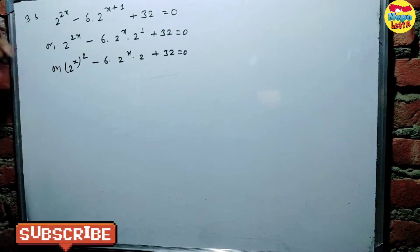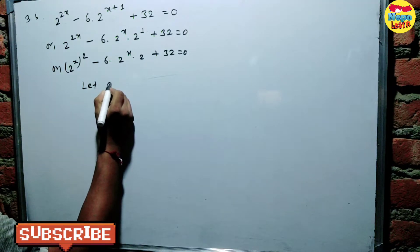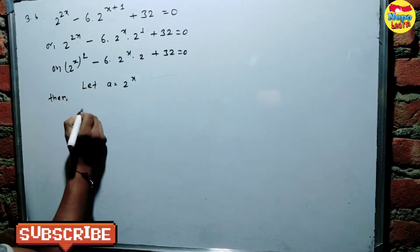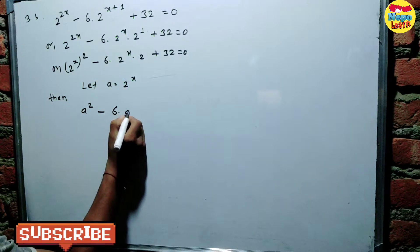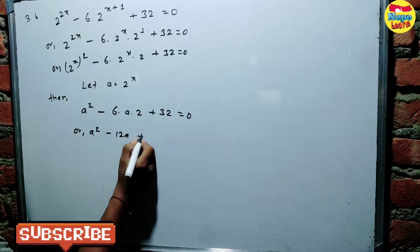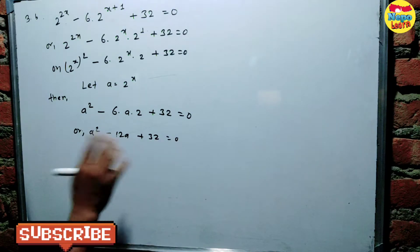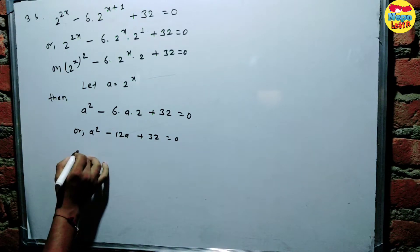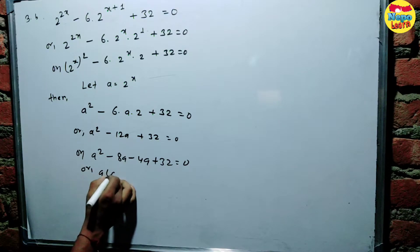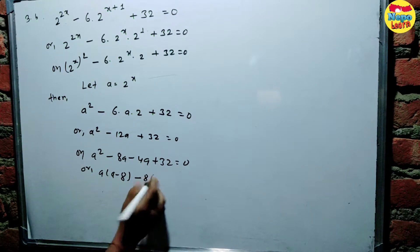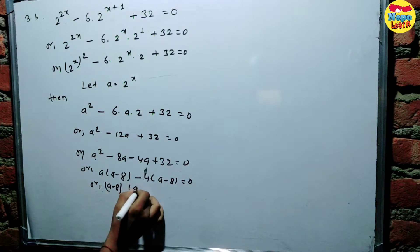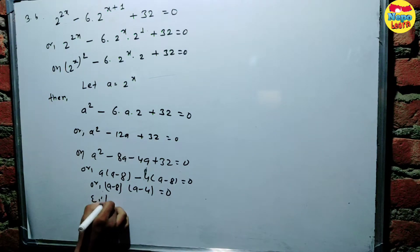Let's call 2k power x as our substitution variable 'a'. So 2 power x squared is a squared. Now we get a quadratic: a squared minus 6 into a into 2, plus some constant equals zero. Multiplying out: a squared minus 6a, giving us 32 minus 8a minus 4a, plus the constant equal to zero.